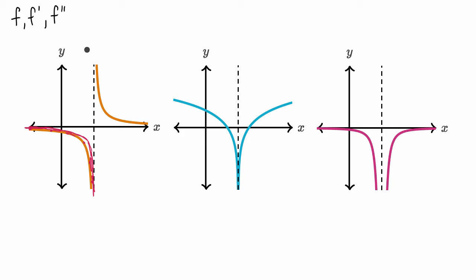To the right of the vertical asymptote, the slope of the tangent line is very negative, but then it becomes less and less negative, and it looks like it is approaching zero. So on this side, the derivative starts out super negative and then asymptotes towards zero. Based on what I just sketched, it looks like the right graph is a good candidate for the derivative of this left graph.